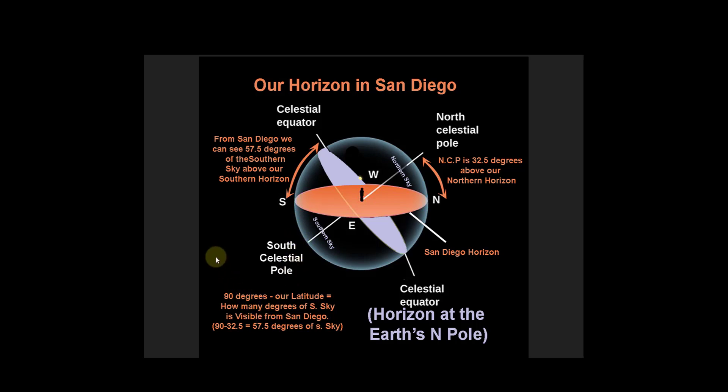So the formula is: 90 minus our latitude equals how many degrees of southern sky is visible from San Diego.